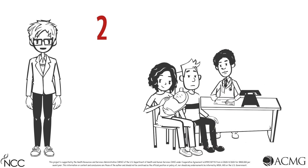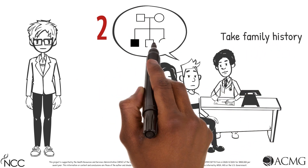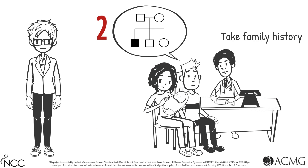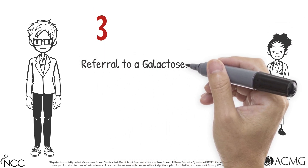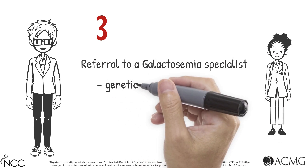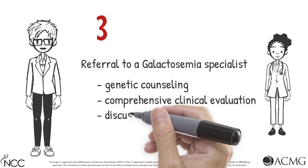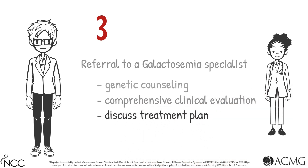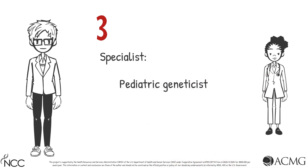Second, take a family history. Because Classic Galactosemia is inherited in an autosomal recessive manner, it is common for there to be no known family history of the condition. Third, arrange an immediate referral to a Classic Galactosemia specialist for genetic counseling, a comprehensive clinical evaluation, and discussion of the treatment plan. The specialist is typically a pediatric geneticist.